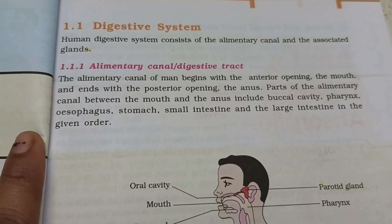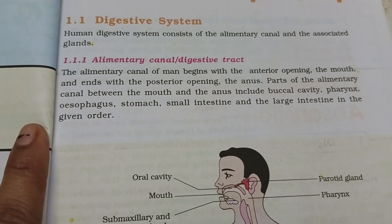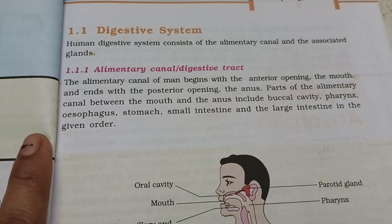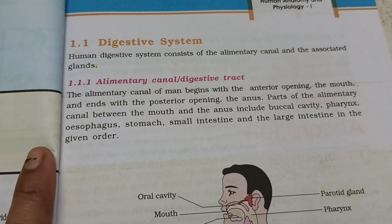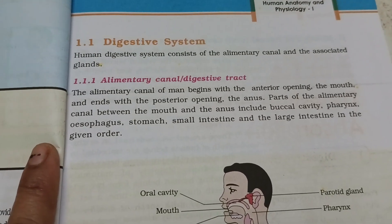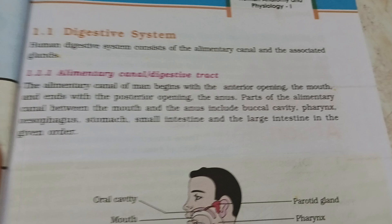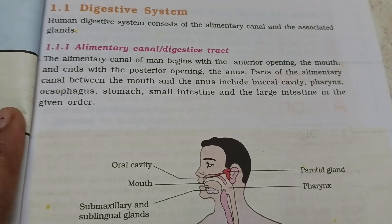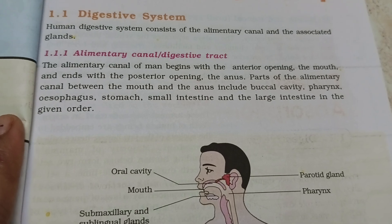The alimentary canal of man begins with the anterior opening of the mouth and ends with the posterior opening, the anus. The mouth is the start and anus is the end — this is a long tube. Parts of the alimentary canal include the buccal cavity.